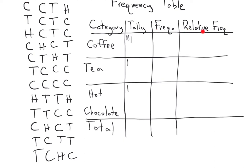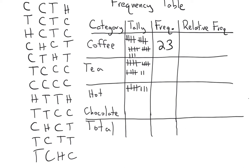Before we talk about frequency and relative frequency, let's fill out the tally part of this frequency table. Pause the video and try it yourself. After putting in the tally marks and grouping them in fives, we can easily count: we have five, ten, fifteen, twenty, twenty-three coffee drinkers. The frequency column just contains the number in that category, so the frequency of coffee drinkers is twenty-three.